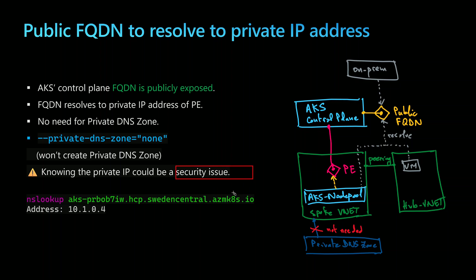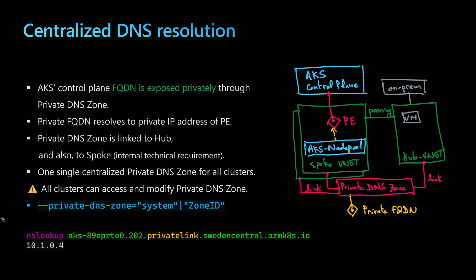For some customers this trade-off is acceptable as it's very simple to implement. However, for enterprise customers that want to respect a zero trust network model, they consider this a security issue and will look for solution number two or three. Let's explore the second solution, which uses centralized DNS resolution. For customers using hub and spoke models, some require that all DNS resolution happens centrally within the hub virtual network.